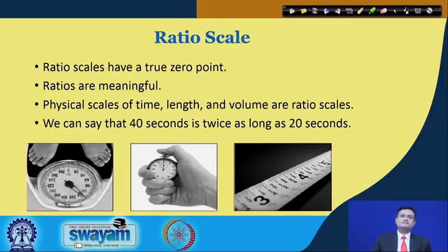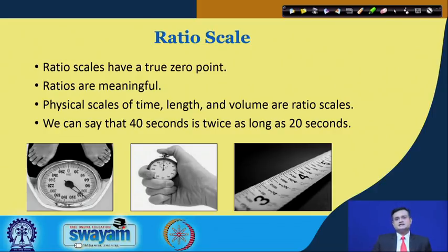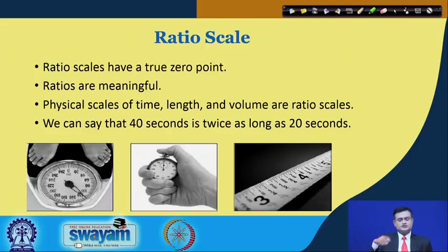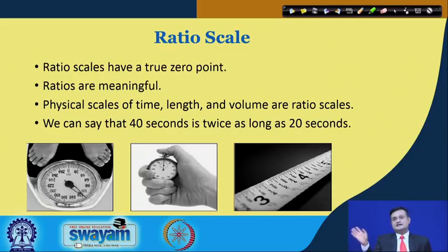The ratio scale has a true zero. You use it widely — stopwatch, measuring tape, everywhere. Zero means zero distance, zero weight, zero minutes — this is a true zero. Ratios are meaningful, and physical scales of time, length, and volume are ratio scales. We can say 40 seconds is twice as long as 20 seconds — something not possible with the interval scale.